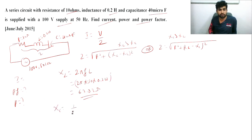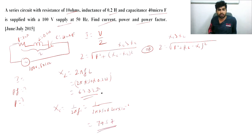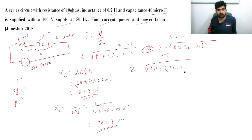XC is equal to 1 divided by 2πfC = 1 divided by (2π × 50 × 40 × 10⁻⁶) = 79.57 ohm. Since XC is greater than XL, we use the second formula. Z equals root of (10 squared + (79.57 − 62.83) squared) = root of (100 + 16.74 squared), giving Z equal to 19.49 ohm.